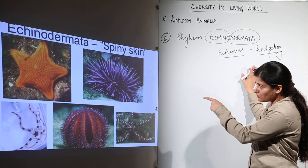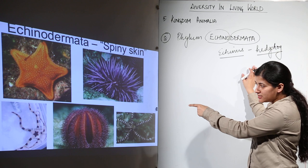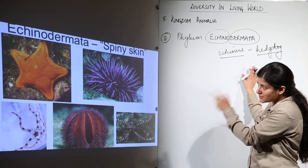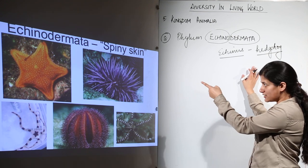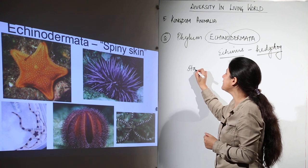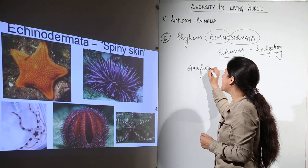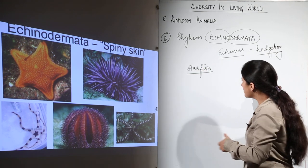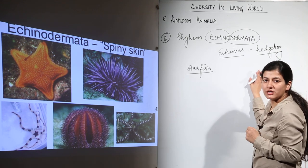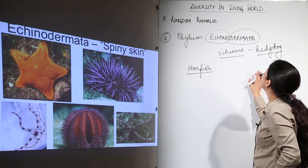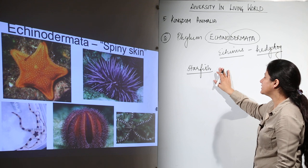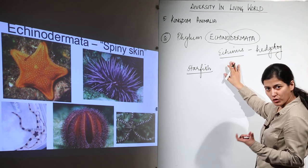As you can see in the picture, you are going to find spines on all the organisms shown here. What catches the eye is the first picture — that of the starfish. So basically we are going to talk about starfishes and echinoderms which are like the starfish itself. The starfish is the best example to study Echinoderms.